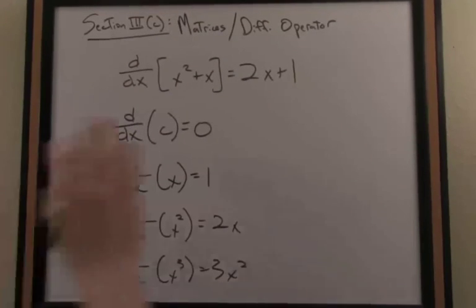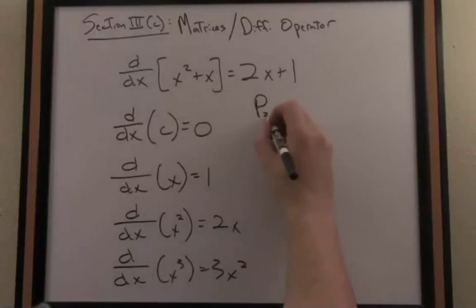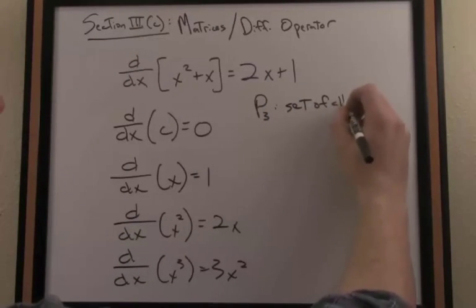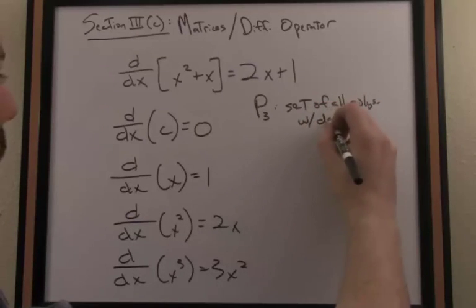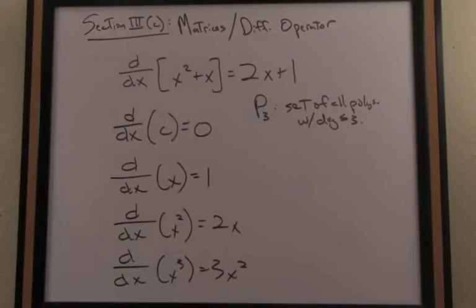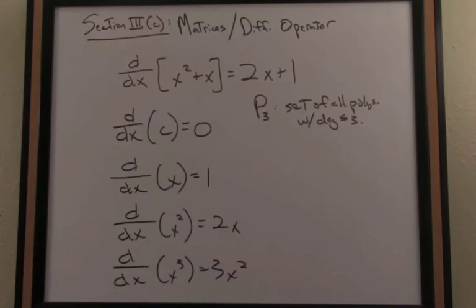So if you recall, let's just consider the vector space as we've defined it before, P3. This is the set of all polynomial functions with degree less than or equal to 3. What I'd like to do is form this matrix, which will be known as our standard matrix for the differential operator,